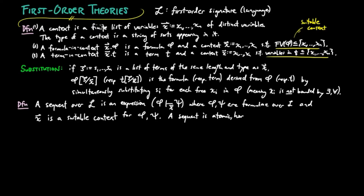We call a sequence atomic, horn, etc., when the formulae phi and psi are atomic, horn, etc. You may think of the turnstile as meaning implication, as in phi implies psi.